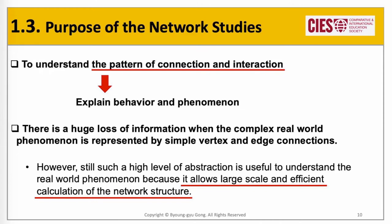Network studies usually aim to understand the pattern of connection and interaction. With structural features of the network, researchers aim to explain behavior and phenomena. But such abstraction of real-world phenomena comes at the cost of losing a lot of information. Complex interpersonal relationships are reduced to a single line counted as one. Researchers may cite others to criticize, recognize, or appeal to authority, but in network analysis such complexity is largely ignored. Still, this high level of abstraction is useful because it allows large-scale and efficient calculation of network structure.